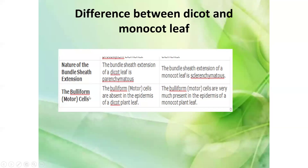Sixteenth, bulliform cells or motor cells — absent in the epidermis of dicot leaf, but present in the epidermis of monocot leaf. These cells help in the folding of leaves. When water is not available, the leaves fold to stop transpiration.